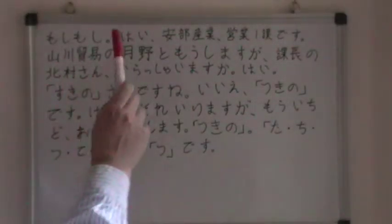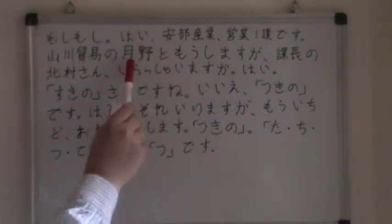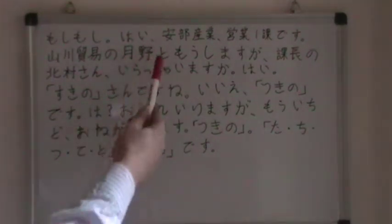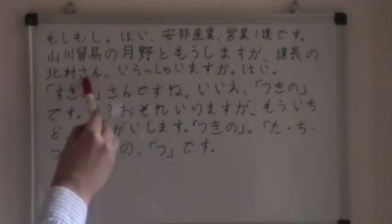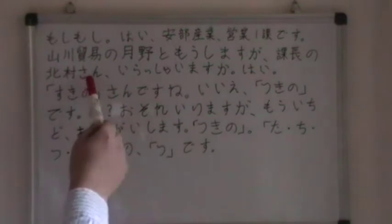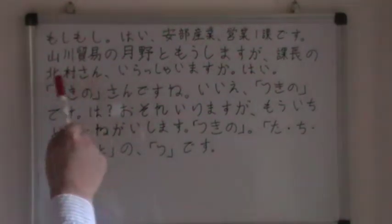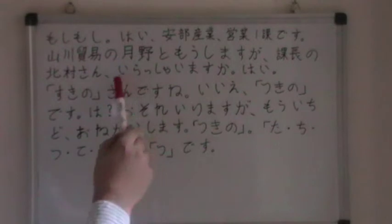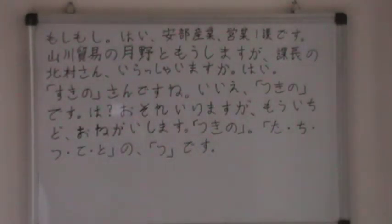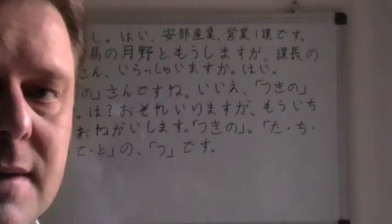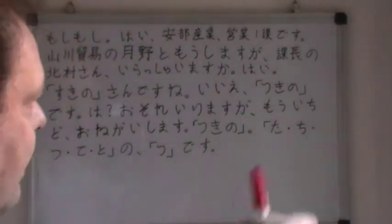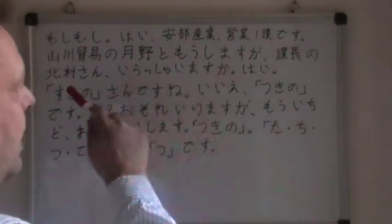San — Mister. You see, we have no San after Tsukino because he is introducing himself, he is talking about himself — then you never use San. Kitamura — irasshaimasu. We had irasshaimasu in one of the last videos, where it was the polite form of kimasu, to come. But here it's the polite form of imasu — to be at some place. Ka — question.